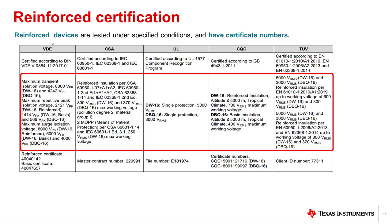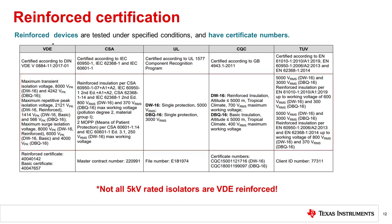While isolation rating is determined by surge test results, achieving a reinforced rating requires that additional conditions be met. Because the conditions of test are a critical part of achieving reinforced rating, not all devices that have a 5 kV isolation rating are reinforced. To identify which devices are reinforced rated, the certificate and conditions of test should be reviewed.